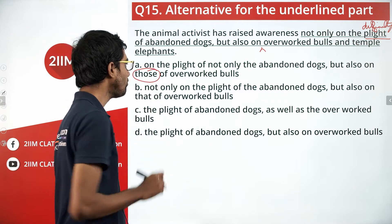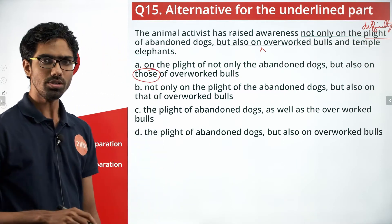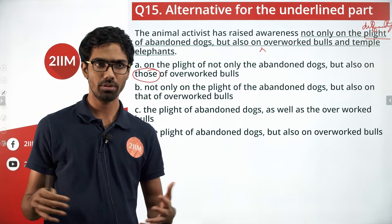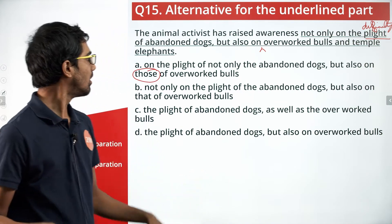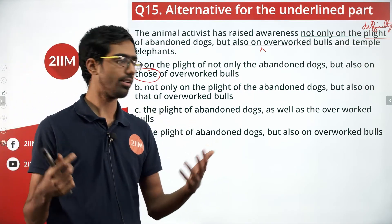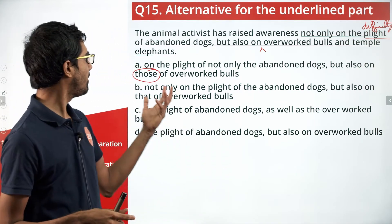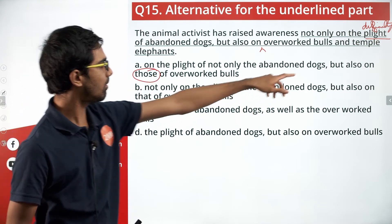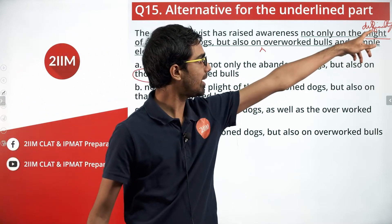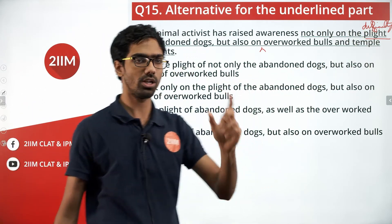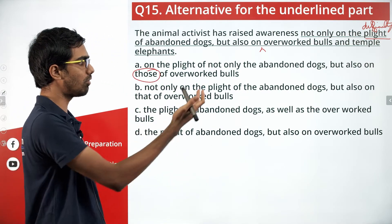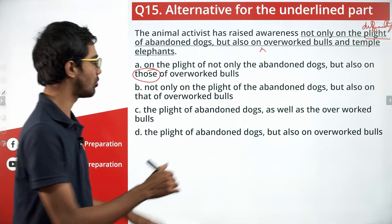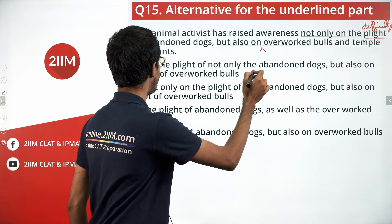'Those' is a plural word — it refers to plural things. We made the point that 'plight' is singular. So 'those' refers to plural, implying 'plights of overworked bulls,' but it should be 'plight of the overworked bulls.' So this option doesn't fit in.